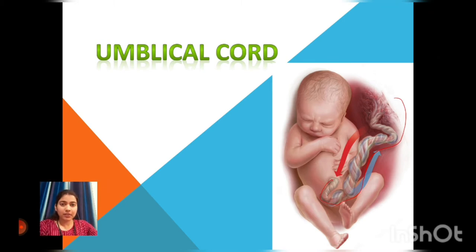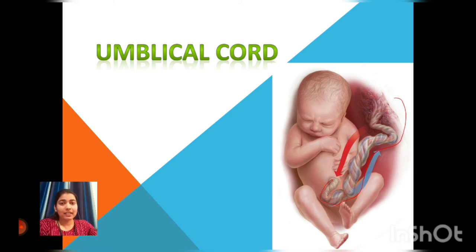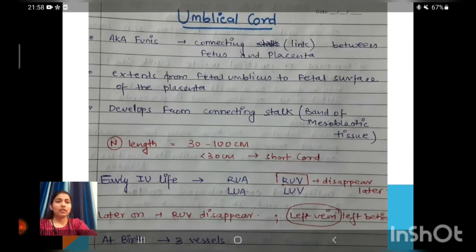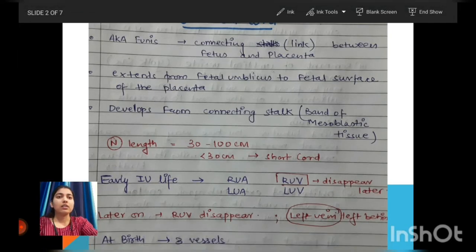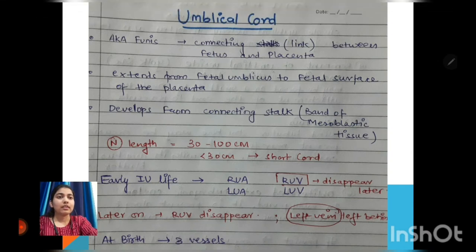Arteries usually carry deoxygenated blood from the fetus to the placenta, and umbilical veins carry oxygenated blood from the placenta towards the fetus. The umbilical cord is also called the funis — it is a connecting link between the fetus and the placenta.